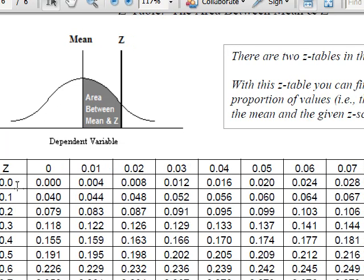So there's our value, z of .17. This is the hundredths, that's the tenths. And that area then, this area between the mean and z, is going to be .067.